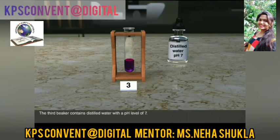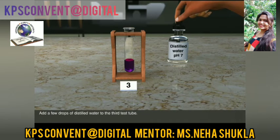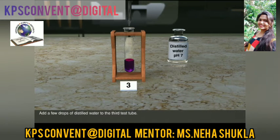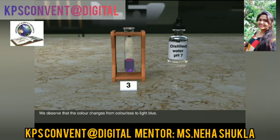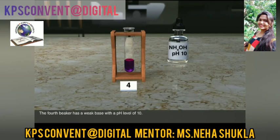The third beaker contains distilled water with a pH level of 7. Add a few drops of distilled water to the third test tube. We observe that the color changes to light blue.